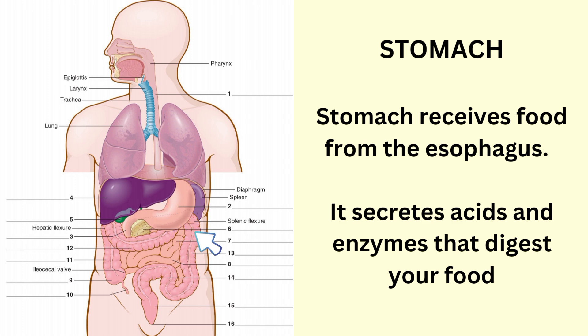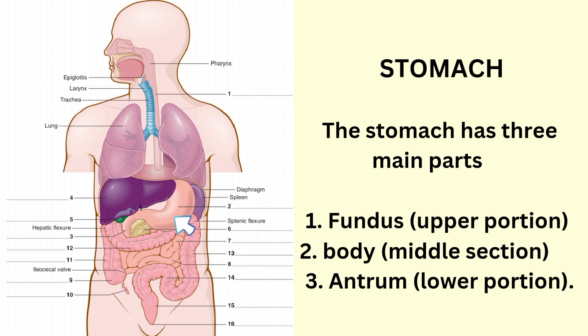Stomach receives food from the esophagus. It secretes acids and enzymes that digest your food. Stomach has three main parts: fundus, body, and antrum.